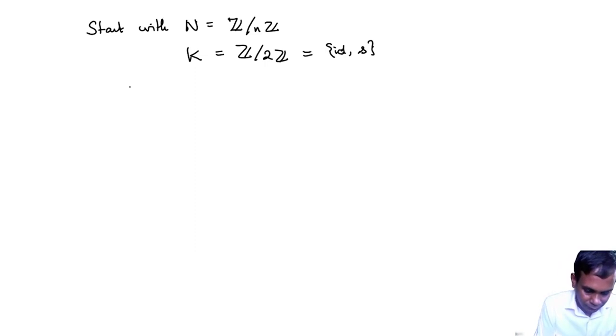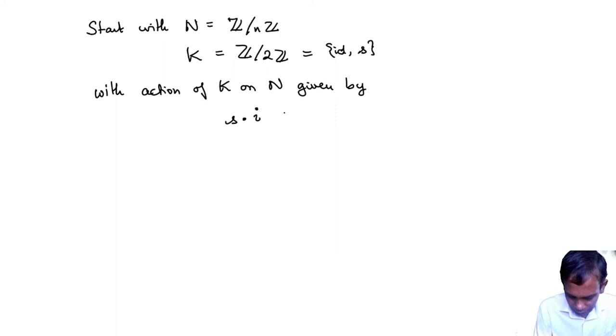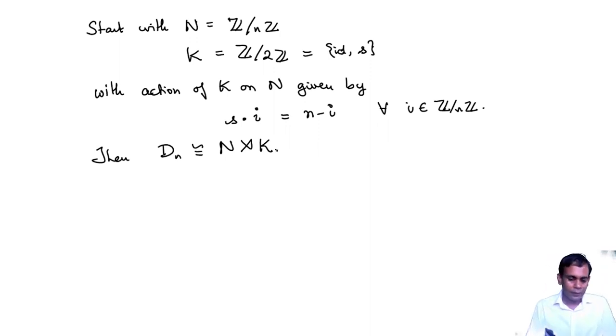And then define the action of K on N given by S dot i is n minus i for all i in Z mod nZ. Okay, and of course identity dot i is just i. That's part of being a group action. Then D_n is isomorphic to the abstract semi-direct product N semi-direct product K. So we don't get anything new, we get back the dihedral group that we looked at earlier.